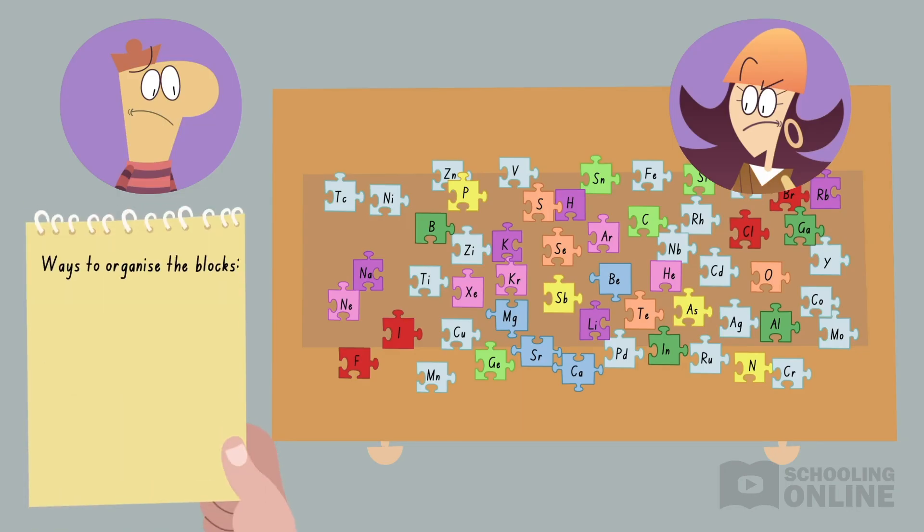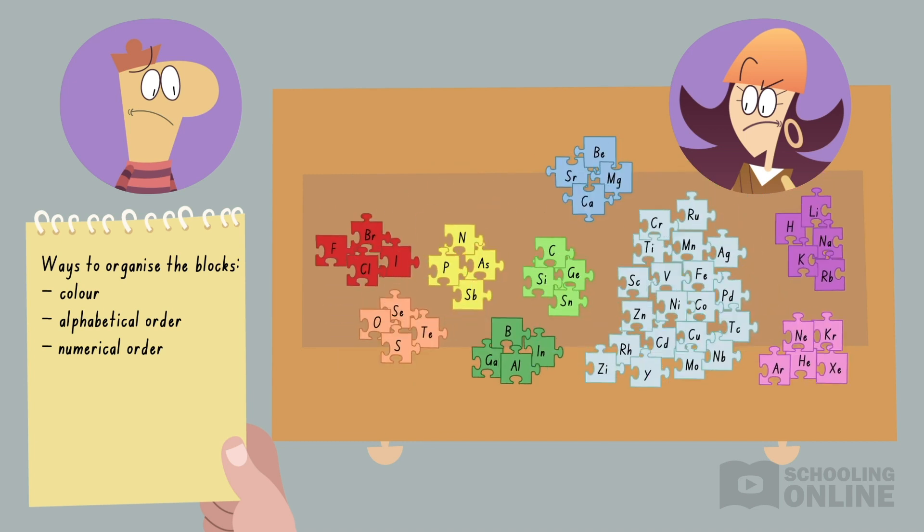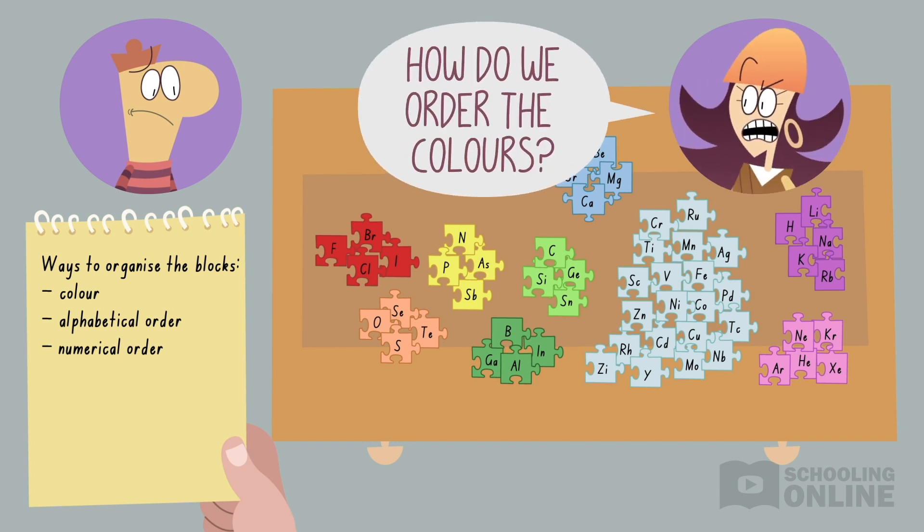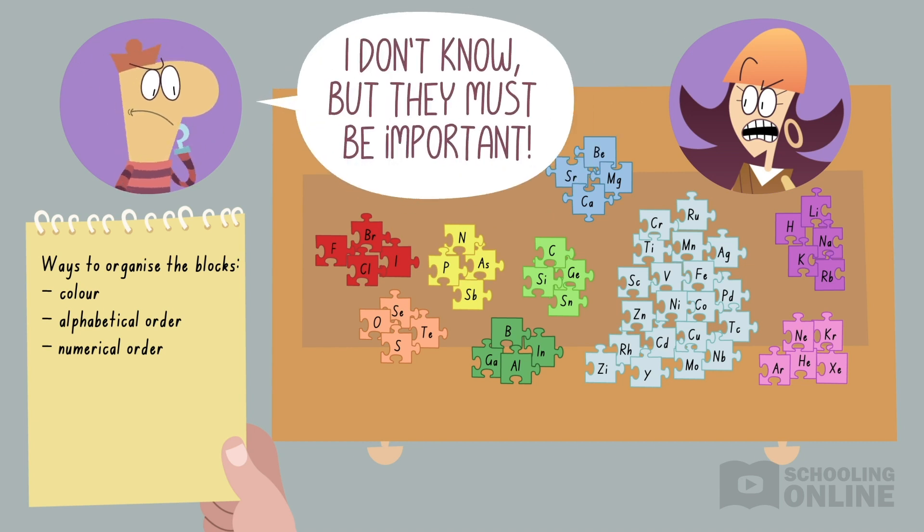To solve this puzzle, they need to look for patterns. Perhaps they should make a pile for each colour. Maybe they could place the blocks in alphabetical order. Or what about ranking the numbers from smallest to largest? With no hints available, they try each method. Firstly, they make a separate pile for each colour. But they hit a brick wall because they don't know how to order the colours. Which colour should be first? Taking a step back, they realise that the colour coding must be important, so they put this thought on hold.